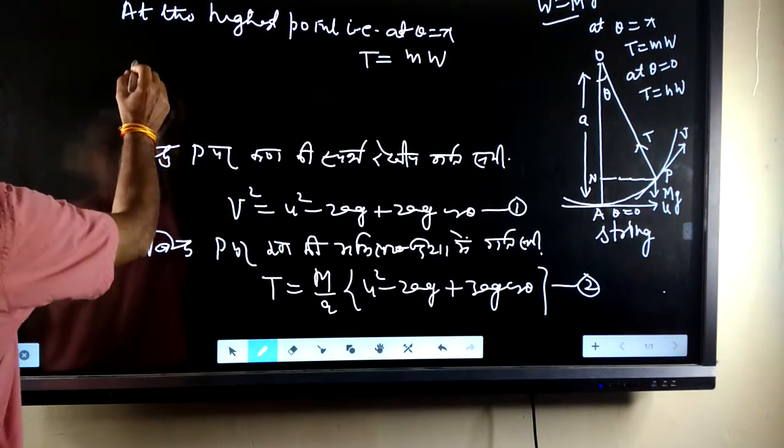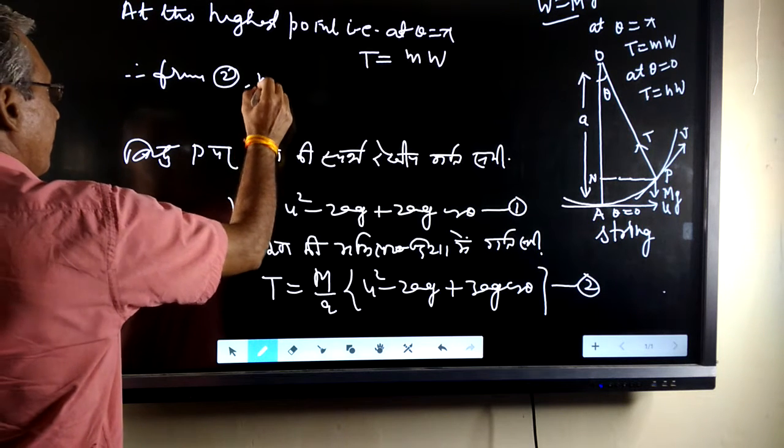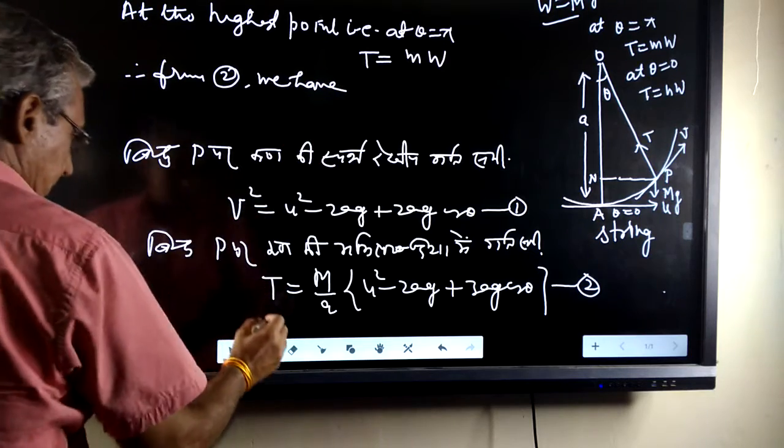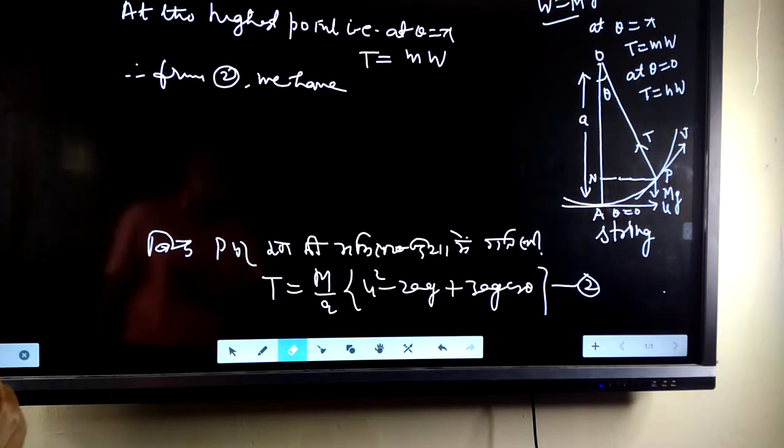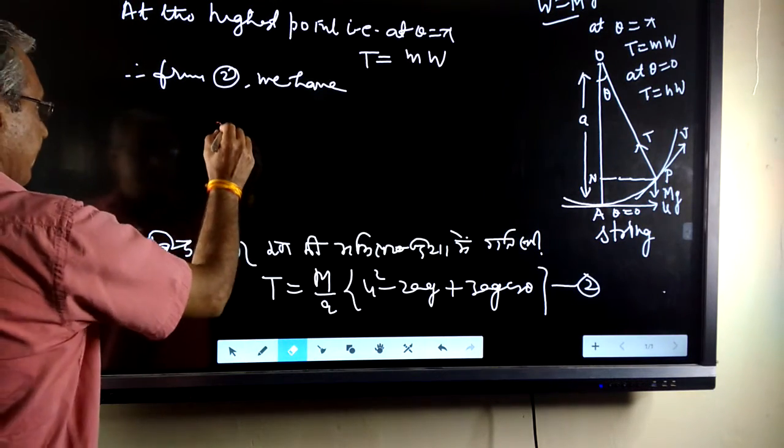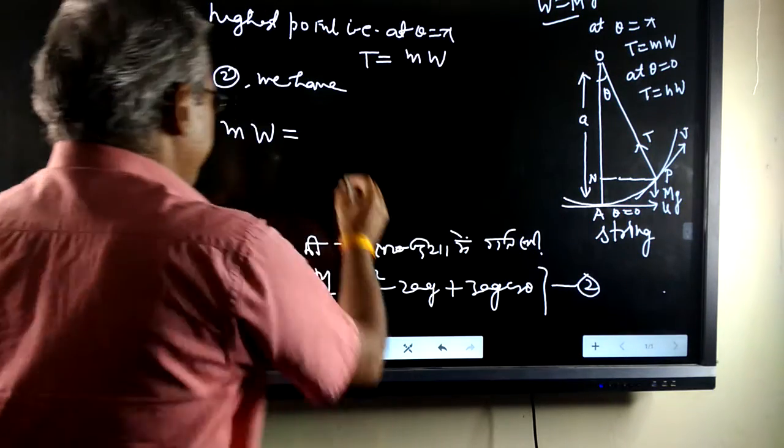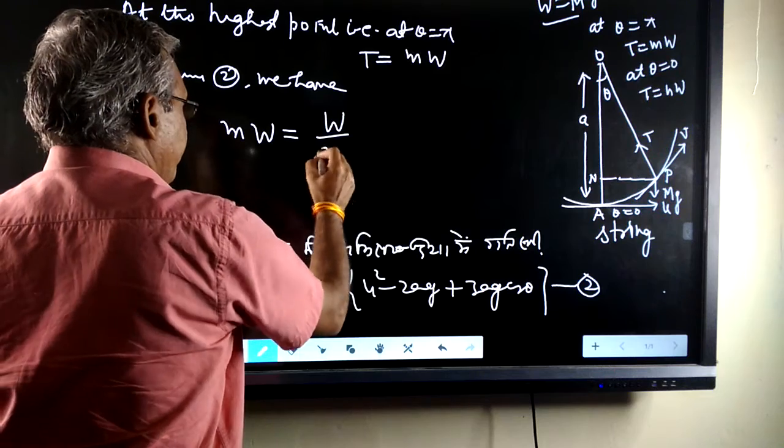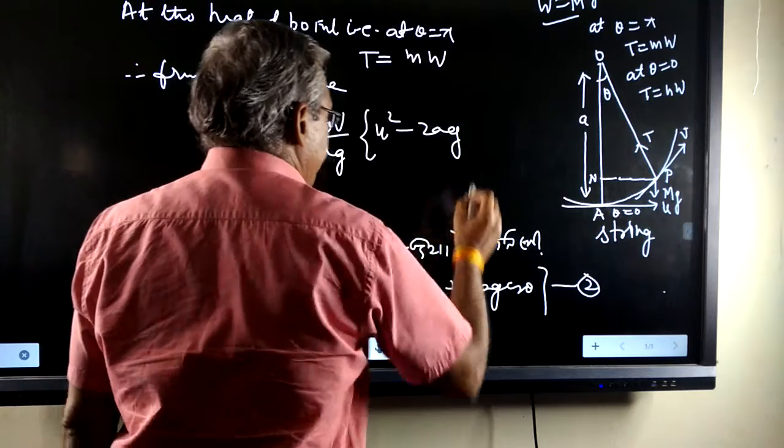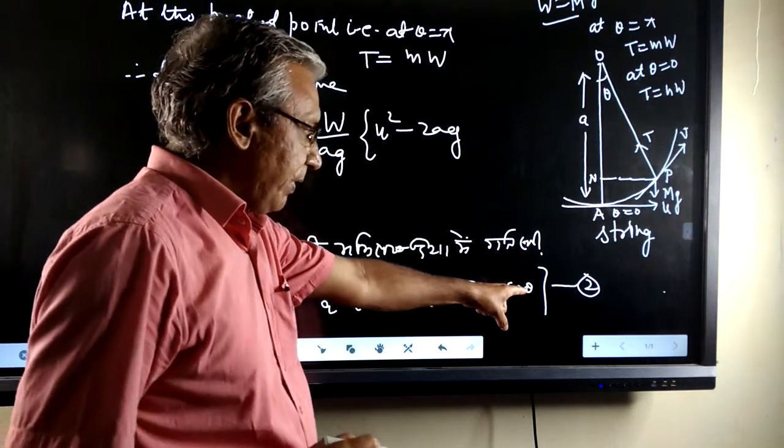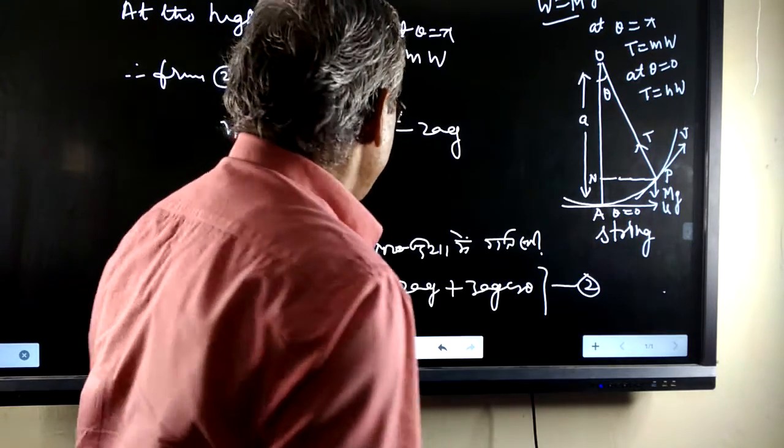Therefore, from equation 2, we have T is mw. Here, m is w by g. This is u square minus 2ag. We are putting the value of theta here, theta is pi, so cos pi is minus 1. Therefore, this is minus 3ag.